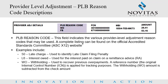Examples of PLB reason codes include, but are not limited to: 50 — late charge, used to identify late claim filing penalties; L6 — interest owed, used to reflect the interest paid on a claim listed on the remittance advice; and WO — withholding, used to recover previous overpayments. A reference number, or ICN, for the claim is listed for tracking purposes. The withholding amount is subtracted from the check amount.